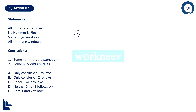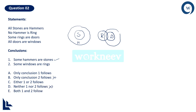All stones are hammers: stone is the inner circle, hammer is the outer circle. No hammer is a ring: no common area between hammer and ring. Some rings are doors: there has to be a common area between rings and doors. All doors are windows: door is the inner circle, window is the outer circle. Now check the conclusions: Some windows are rings — absolutely correct, because in every single case ring and window will have a common area no matter how you draw the Venn diagram. Both conclusions 1 and 2 are right — pick both follow.